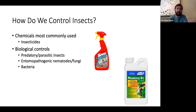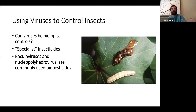Another option to control insects is using biological controls — biological agents used to control a particular insect. These can be predatory or parasitic insects, entomopathogenic nematodes, or fungi and bacteria. But as you may have learned, viruses are not living — can they be biological controls? Absolutely. Viruses are used to control insects and are known as specialist insecticides, meaning they only infect certain species. Many viruses are used to control caterpillar or moth larvae, and the most commonly used biopesticides are baculoviruses and nucleopolyhedra viruses.